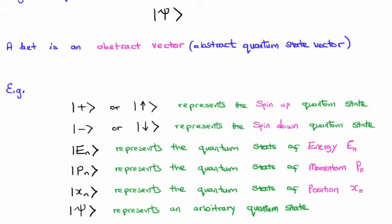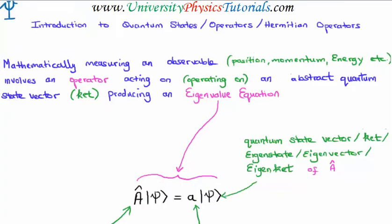What sort of quantum states could you expect to come across when studying quantum mechanics? Well, if you want to talk about a spin up quantum state you might use kets looking like this, or a spin down quantum state might be represented like this. If you're talking about a quantum state of a particular energy, an energy E sub n, well then you'd use the ket E sub n like this. Or the ket p sub n like this to represent a quantum state of a definite momentum p sub n. Similarly with the position ket x sub n. And if you want to represent an arbitrary quantum state, generally we use the Greek letter psi. The quantum state has all the information in regards to things like position, momentum, and energy.